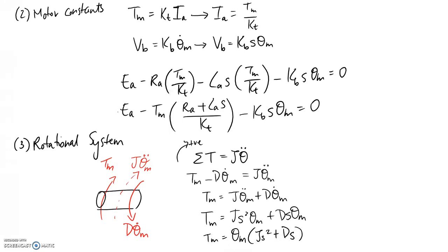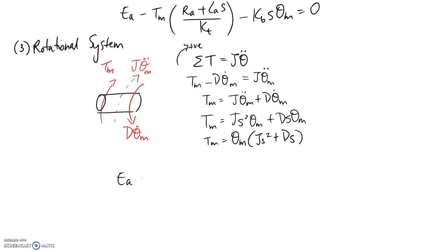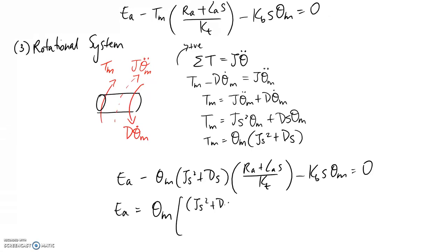And that's what we end up with. So now what I should be able to do is substitute this equation back up in here, and it's going to eliminate Tm from the equation. And the only variables should then be Ea and theta m, which are directly related to that transfer function I'm going for. So let's sub it in. And we get that.